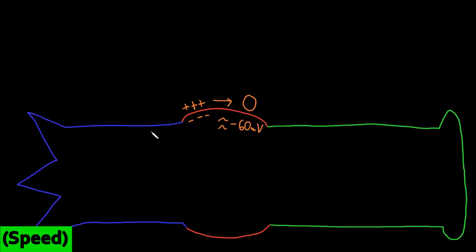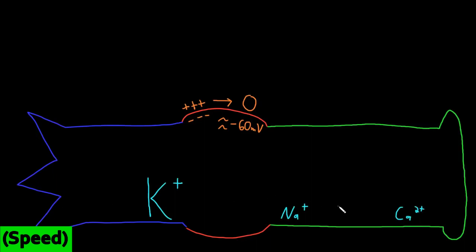The resting potential of neurons is related to concentration differences, also called gradients, of many ions across the cell membrane. There are lots of different ions with high concentrations outside the neuron compared to lower concentrations inside, or vice versa. The most important cations for neuron function are potassium (K+), sodium (Na+), and calcium (Ca2+) — each calcium ion has two positive charges. The most important anions are chloride (Cl-) and multiple organic anions, written as OA-.